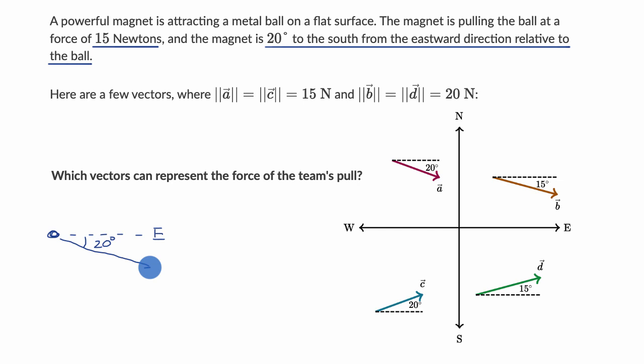The magnet is pulling on the ball, so the vector would go in that direction towards the magnet, and we know it has a force of 15 newtons. That's the magnitude. So it needs to be a 15 newton magnitude.